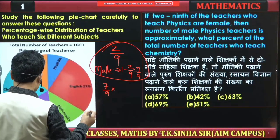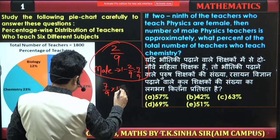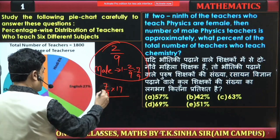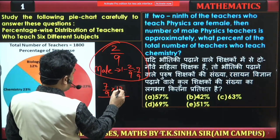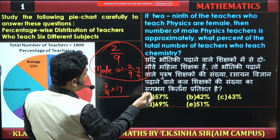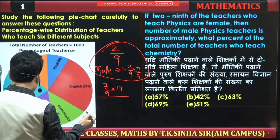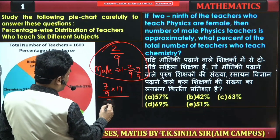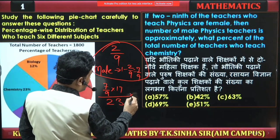Physics is 17. This is 2 by 9, this is the percent. This is the chemistry of chemistry. So, how much is it? 23 into 100.